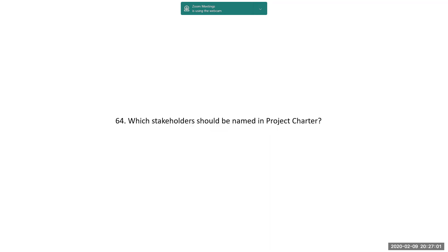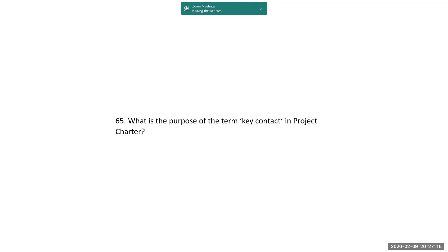Which stakeholders should be named in the project charter? What is the purpose of the term 'key contact' in the project charter? One contact will always be better because there are so many team members involved. You can't ask every team member, and they may not know the details from other members. Therefore, there must be one key contact who knows everything about what all members are doing and the conclusion of the work carried out by the different team members.